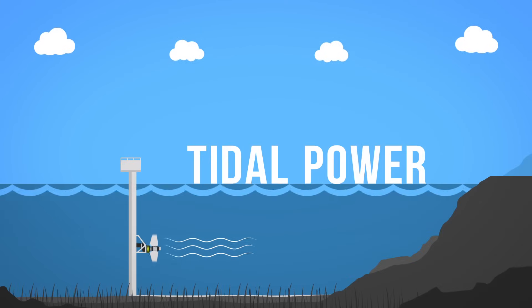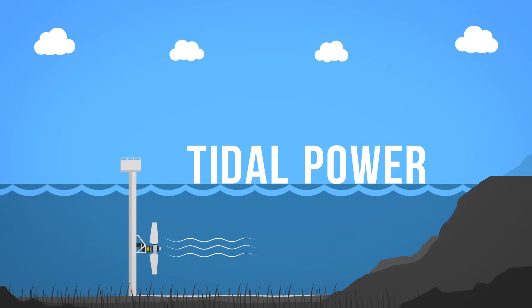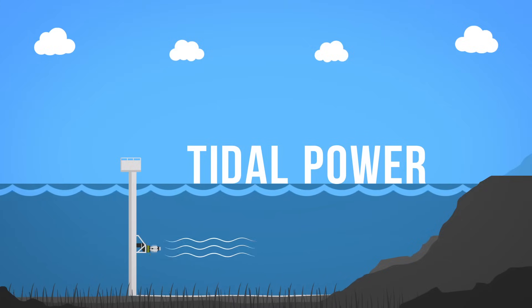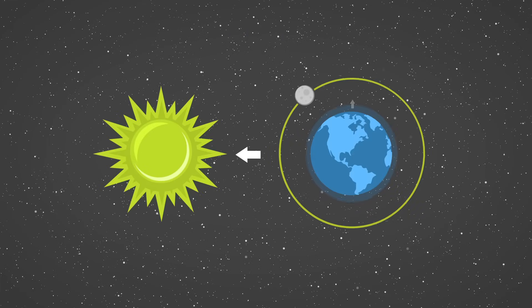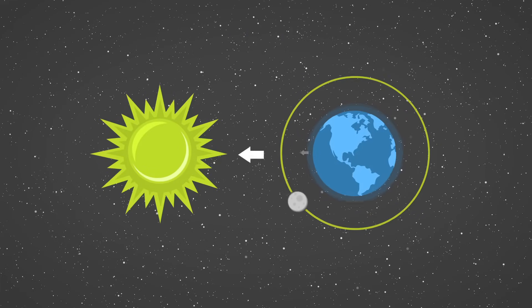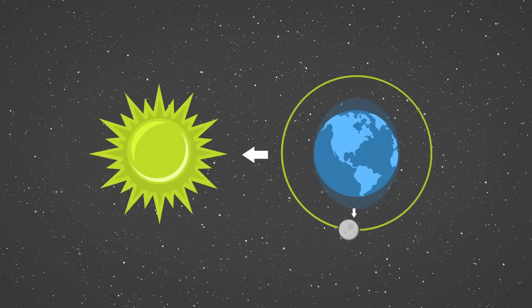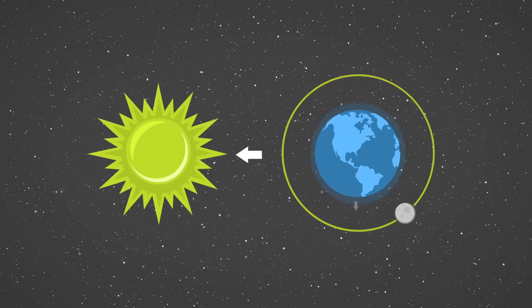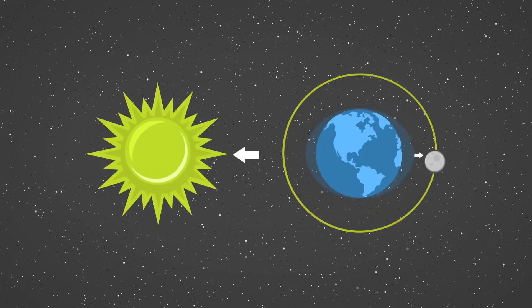Tidal power is a form of hydropower that converts the energy from the natural rise and fall of the tides into electricity. Tides are caused by the combined effects of gravitational forces exerted by the moon, the sun, and the rotation of the earth.